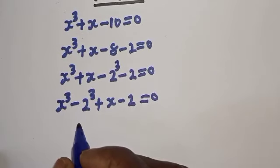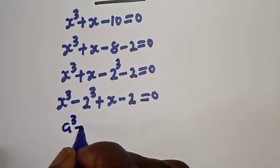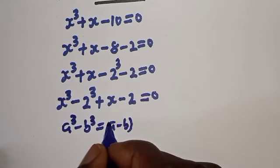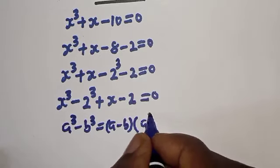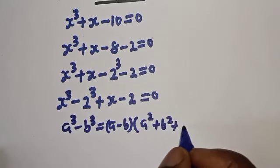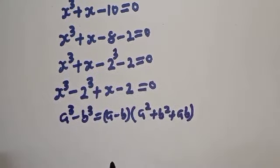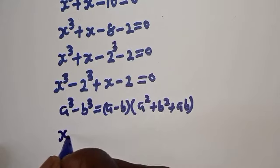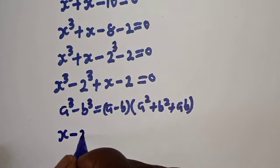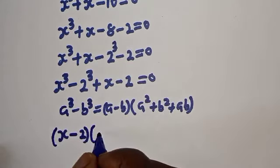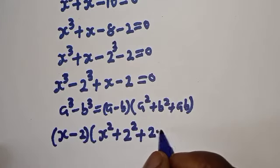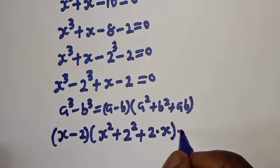Take note of this exponential rule: if you have a raised to power 3 minus b raised to power 3, this is equal to (a minus b) bracket (a squared plus b squared plus ab). Then applying this, we have s minus 2 bracket (s squared plus 2 squared plus 2 multiplied by s).